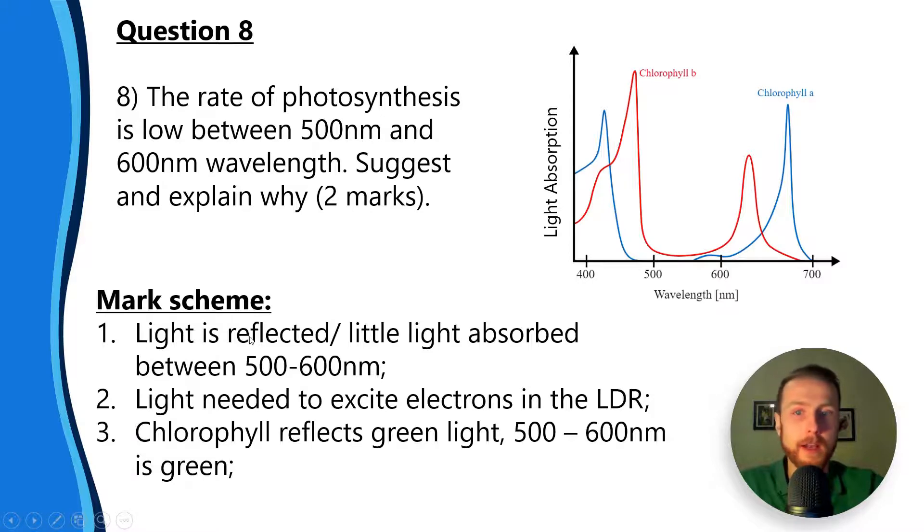First mark is light is reflected or little light is absorbed between 500 and 600 nanometers, and that's represented in the graph here. If we're not absorbing light, we're not getting photoionisation, we're not getting the production of ATP, we're not getting the production of NADPH. Number two: light is needed to excite electrons in the light dependent reaction. Number three: chlorophyll reflects green light, and 500 to 600 nanometers would represent green light.